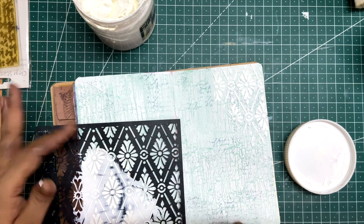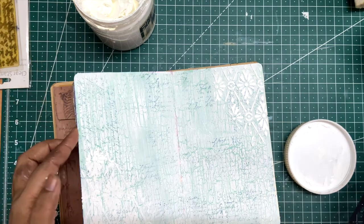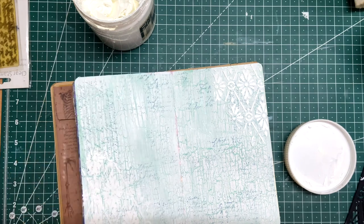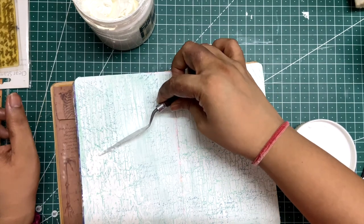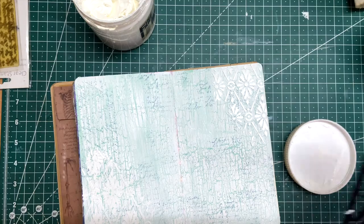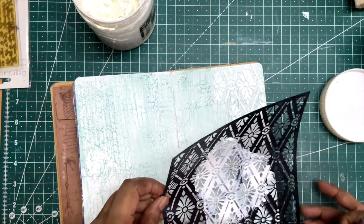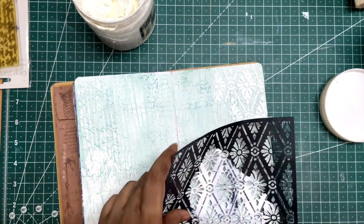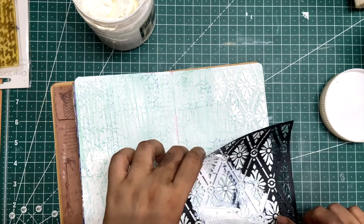I don't want to overcrowd the page with the stencil so I'm just keeping it on the edges and for the rule of three I'm just putting one more application at the right-hand side lower side of the page.